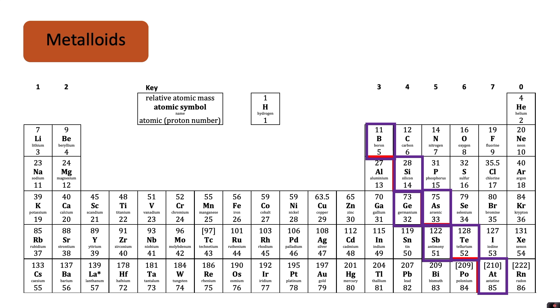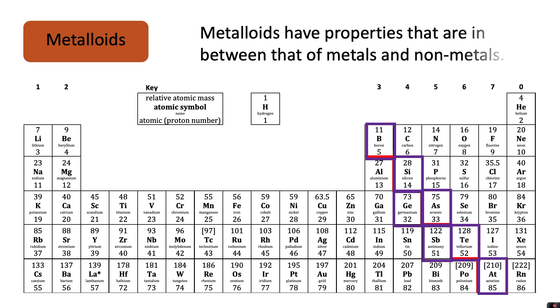There are some elements that lie very close to the line that separates the metals and the non-metals, and we call these metalloids. Metalloids have properties that are in between that of metals and non-metals. So for these elements, you might find that some of their properties are very similar to metals, and some of their properties are similar to non-metals.